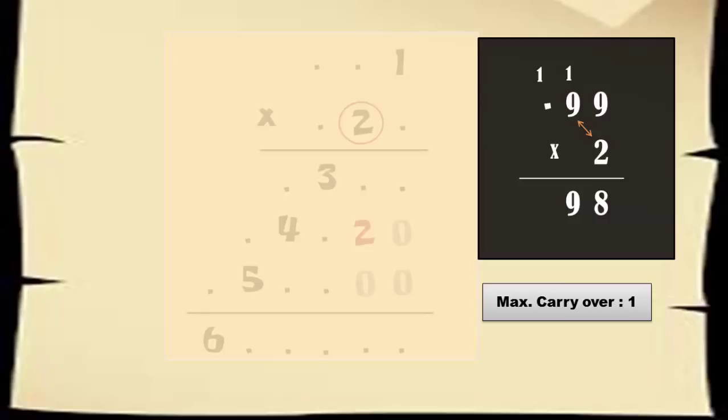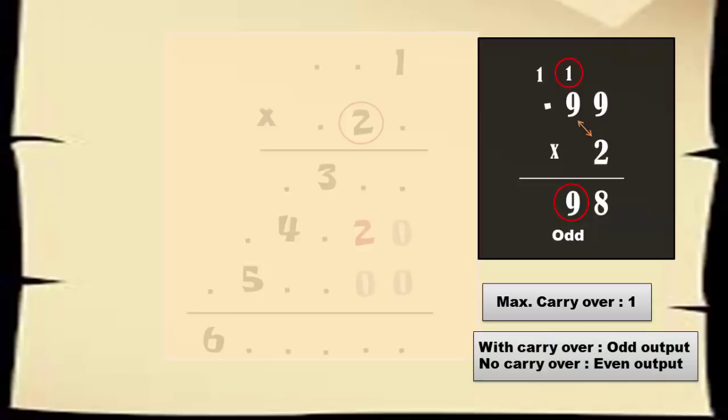The second important point is that if there is a carryover, then the outcome will be an odd value. Because 2 multiplied by any number gives even value and adding the carryover one gives odd value.